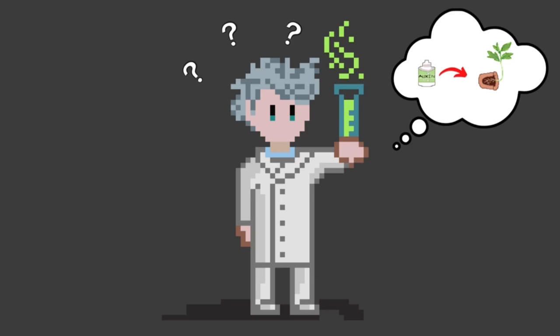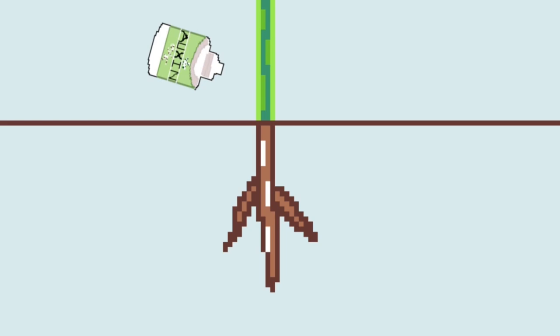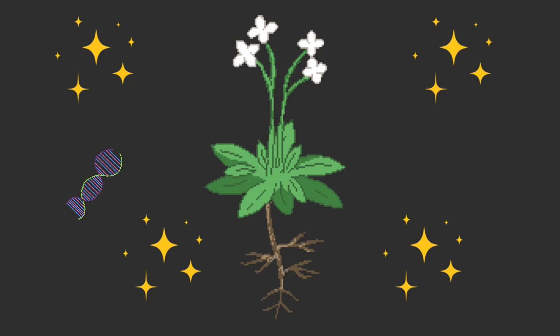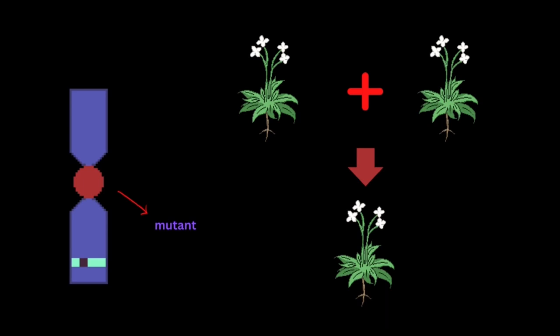Now that we know what gravitropism is, it's important to understand how scientists were able to prove that auxins and certain genes were the reason for gravitropism in plants. Laurence Hobby and Marc Estelle worked on a model organism known as Arabidopsis thaliana to prove the genetic importance in gravitropism. Mutant Arabidopsis plants having an altered response to auxins were chosen for this experiment. A new locus involved in the auxin response was discovered on chromosome 1 of the Arabidopsis plant, known as AXR4. These AXR4 mutations were found to be recessive in nature — that is, both parent plants must have this mutation in order for the phenotype to be seen.